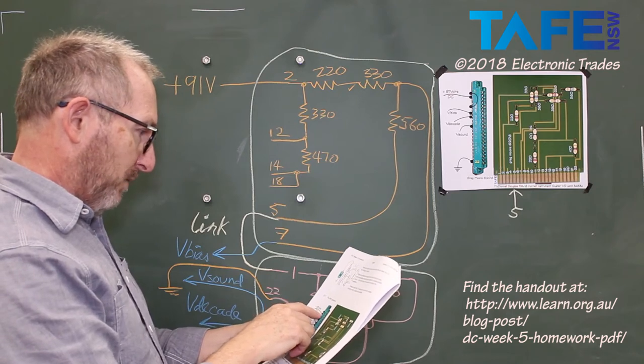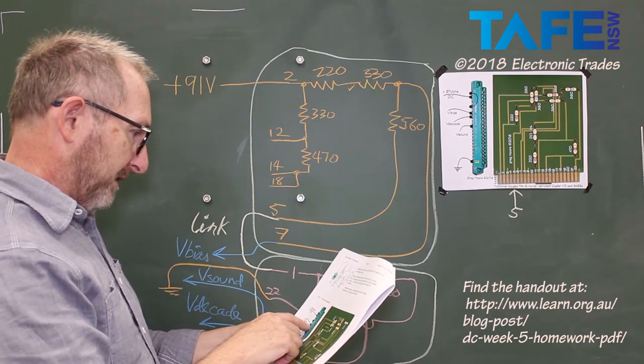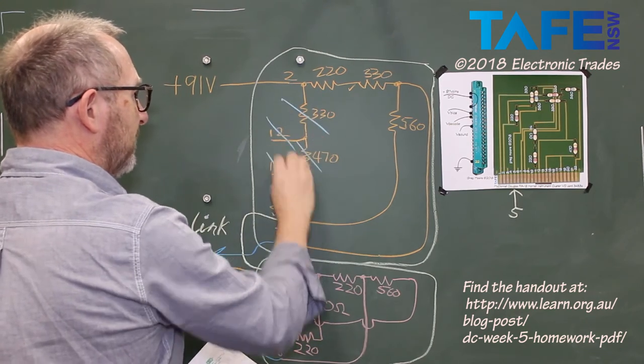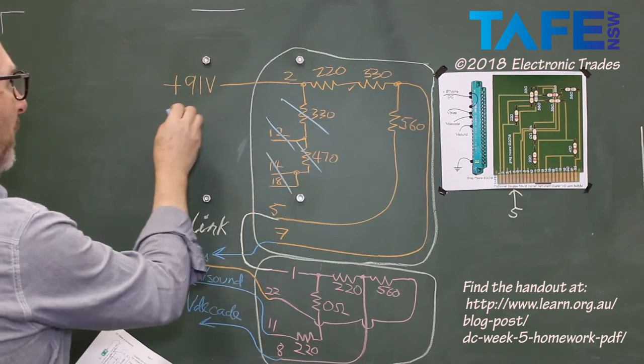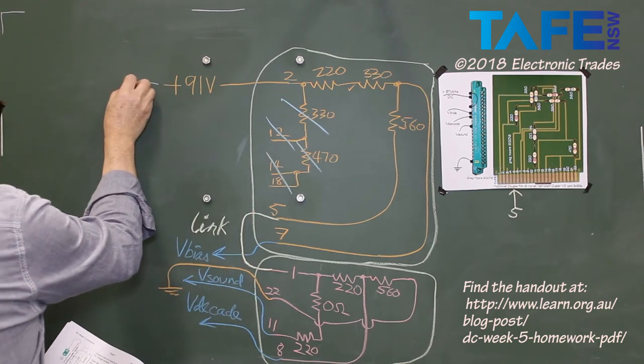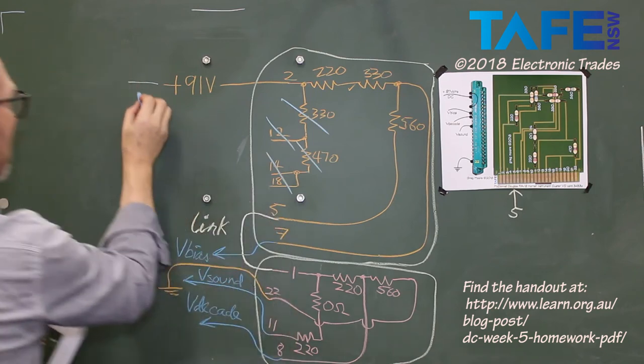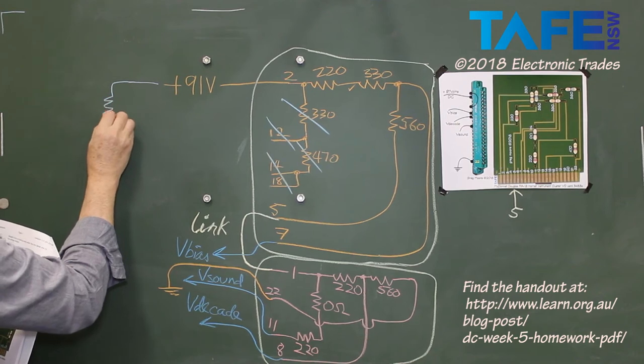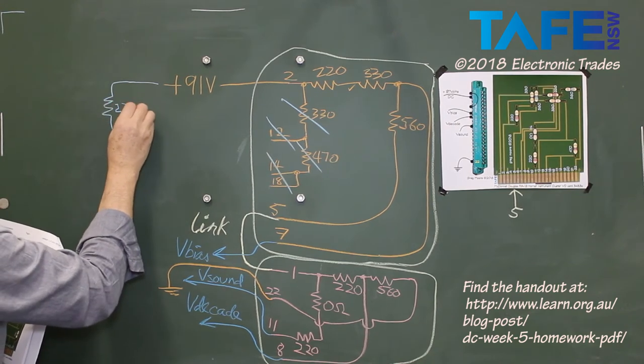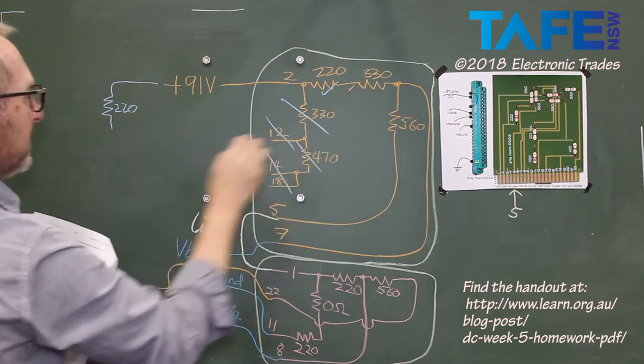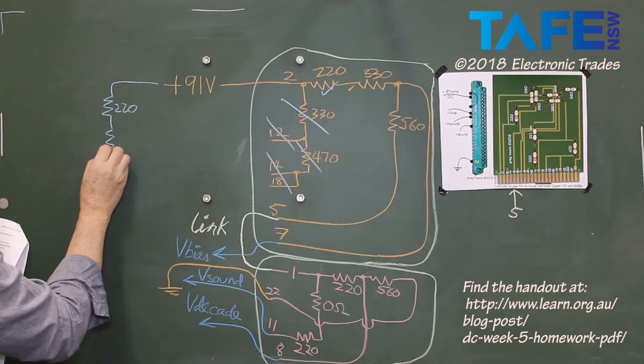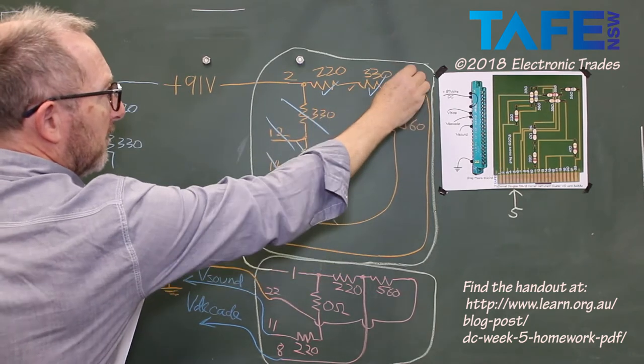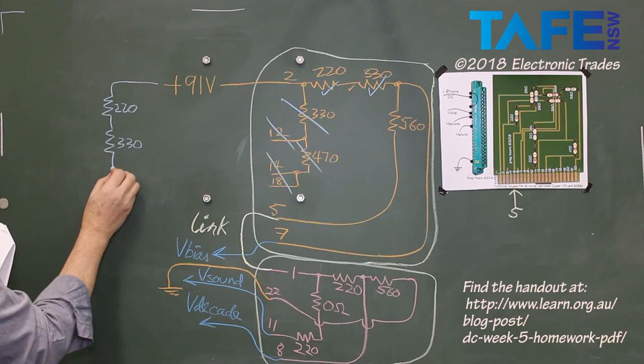Now, looking at our circuit, 12, 14, and 18, we don't use. We've got nothing connected to those. I'll just double check my pins here. Yes, we don't use any of these, so we can knock those out completely. So, 91 volts, and I'll come over here to do this. 91 volts comes in, goes through a 220. Tick. Picks up a 330. Tick. Picks up a 560 and comes out of pin 5.